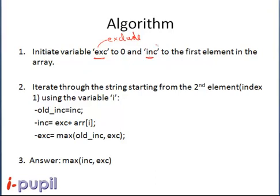And inc tells us the maximum sum obtained so far including the previous element. So at any point in time, the maximum sum of non-adjacent elements would be the maximum among exclude and include. When we have finished scanning the whole array, the answer would be the maximum among exclude and include. We use exclude and include because we don't want to consider adjacent elements in the sum.